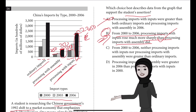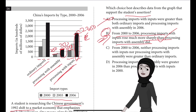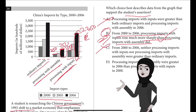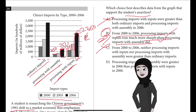Choice A is incorrect because the graph indicates that ordinary imports were greater than both types of processing imports in 2006 — not that processing imports with inputs were greater than ordinary imports and processing imports with assembly that year.